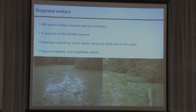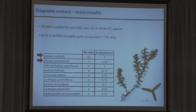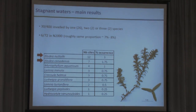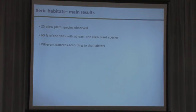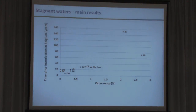In stagnant waters, we visited 400 water bodies in and outside the Natura 2000 network and looked mainly for aquatic plants. We found plants in 30 of the 400 ponds, and the most common were Elodea species, with the same proportion of occurrence inside and outside Natura 2000. This might suggest Elodea species are the most intrinsically invasive, but if we plot the time of residence against occurrence, it shows that Elodea have been present for much longer than the other plants — so we will probably have the same problems with other species as well.